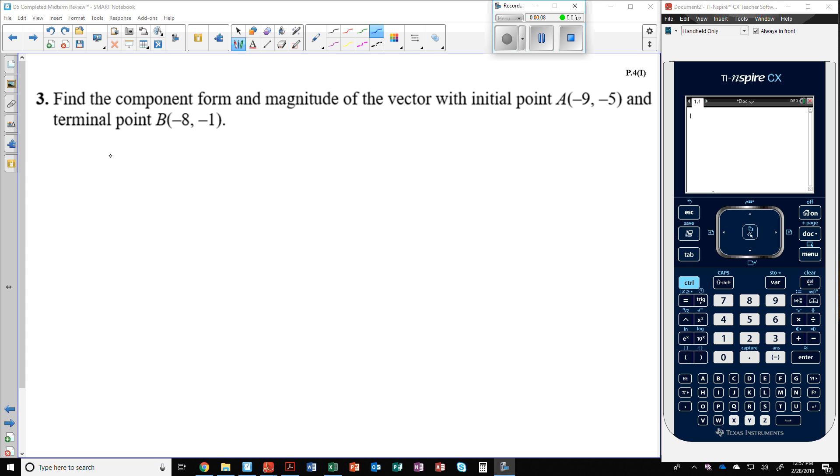Like we said at number 2, any time you see the words initial and terminal, you take your terminal point and subtract it by the initial point. So I take my terminal which is negative 8, negative 1 and subtract by the initial point of negative 9, negative 5.